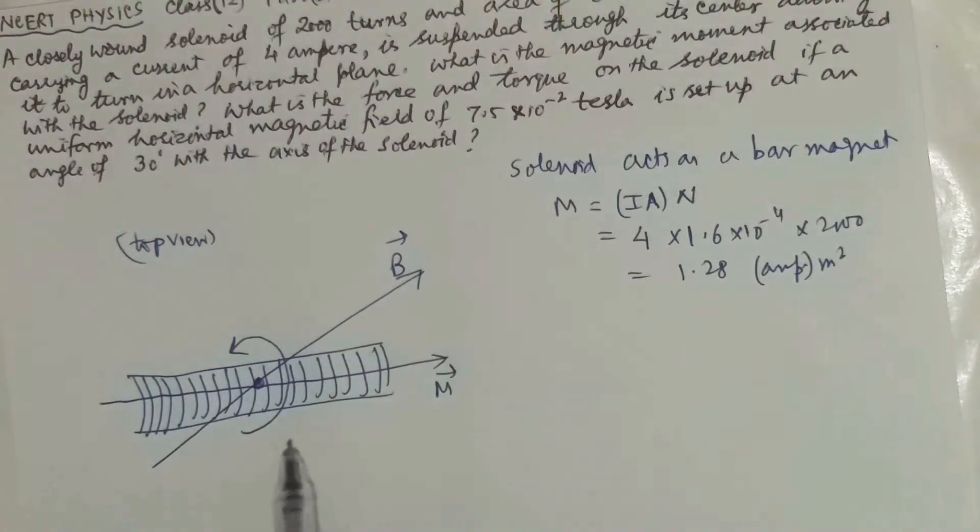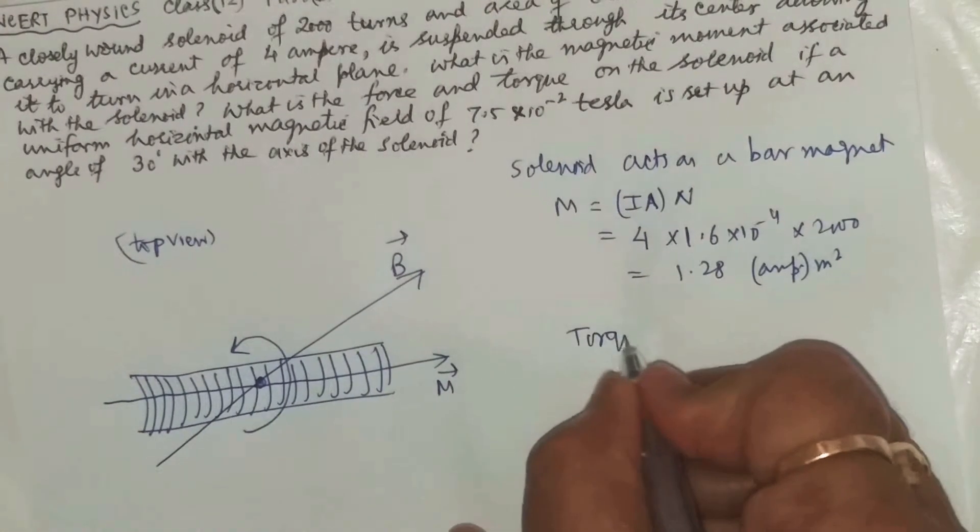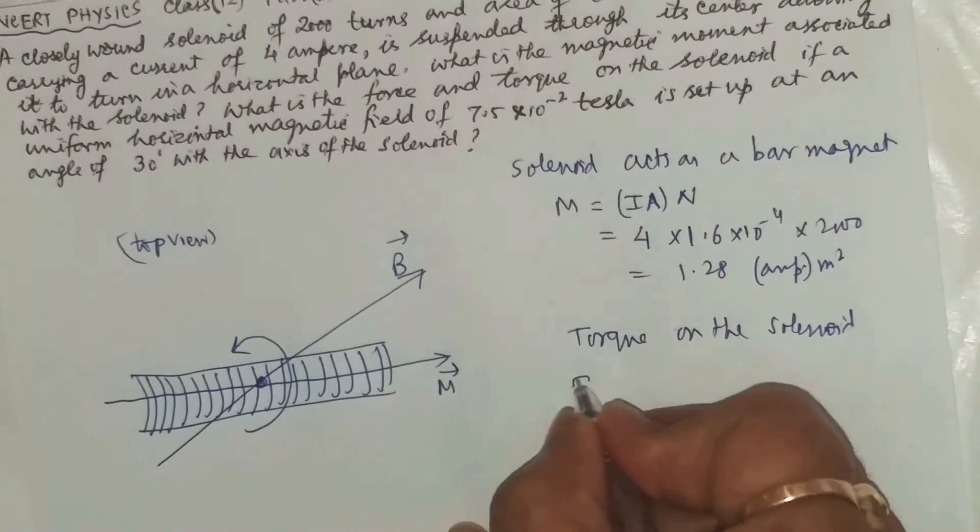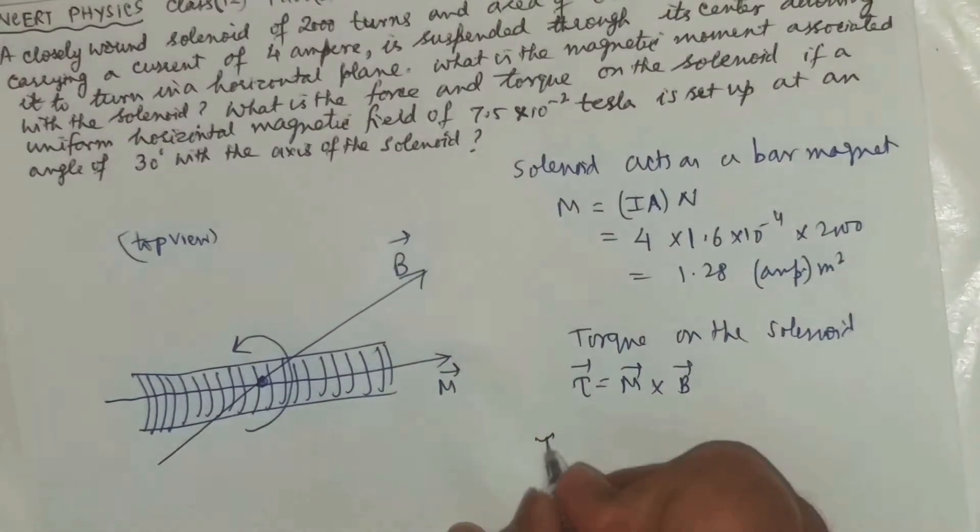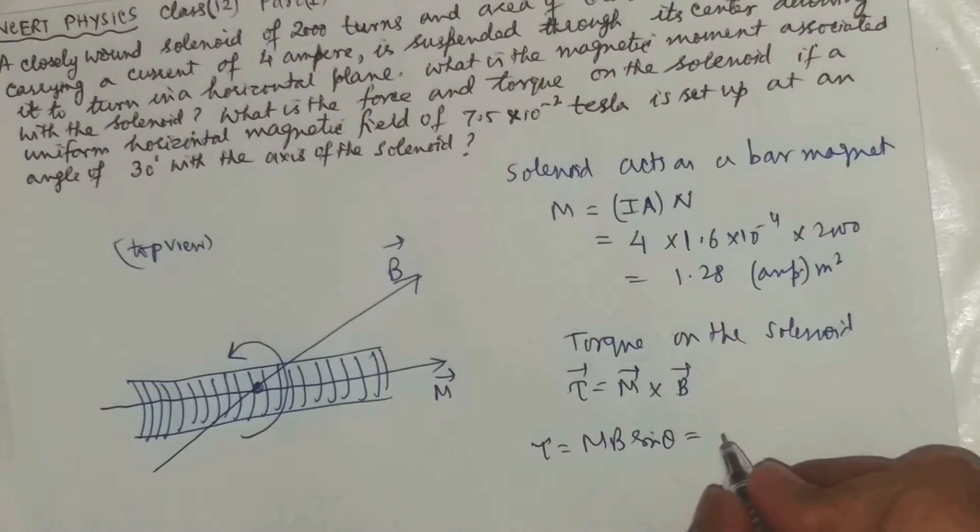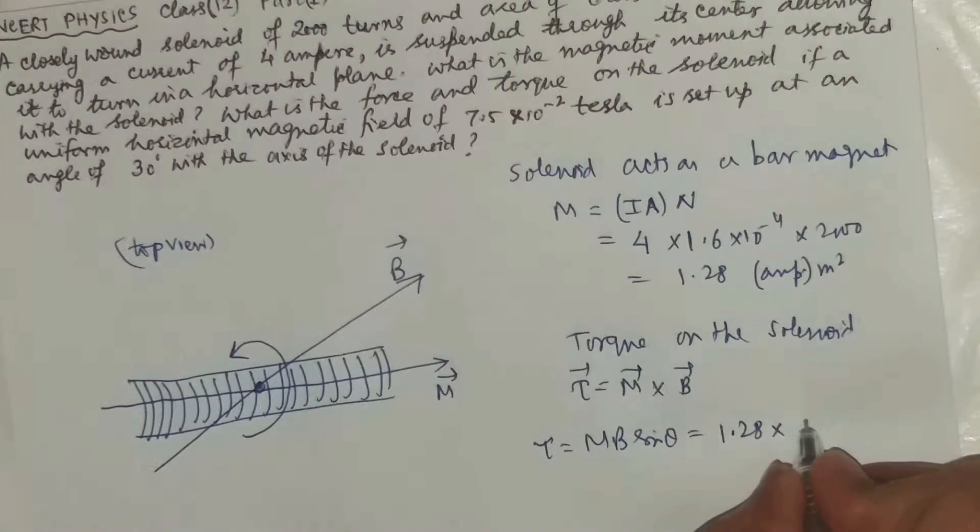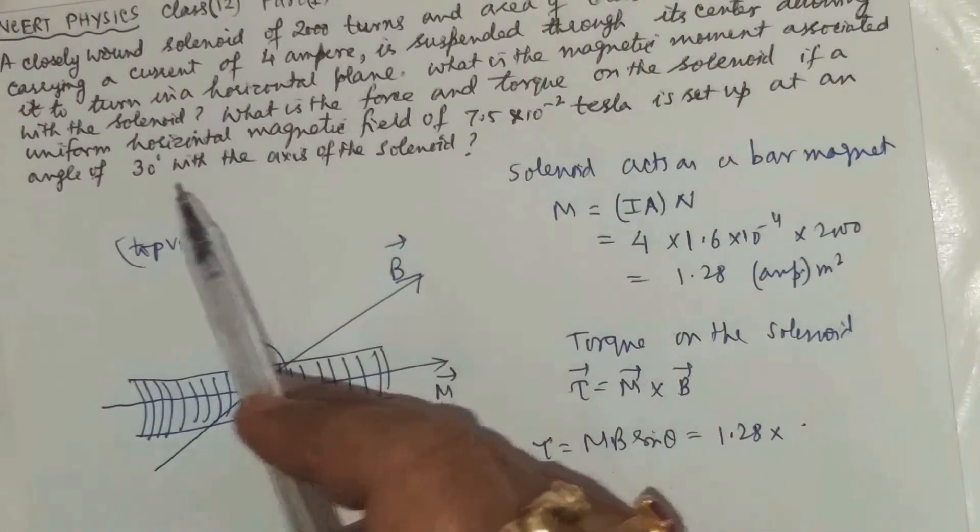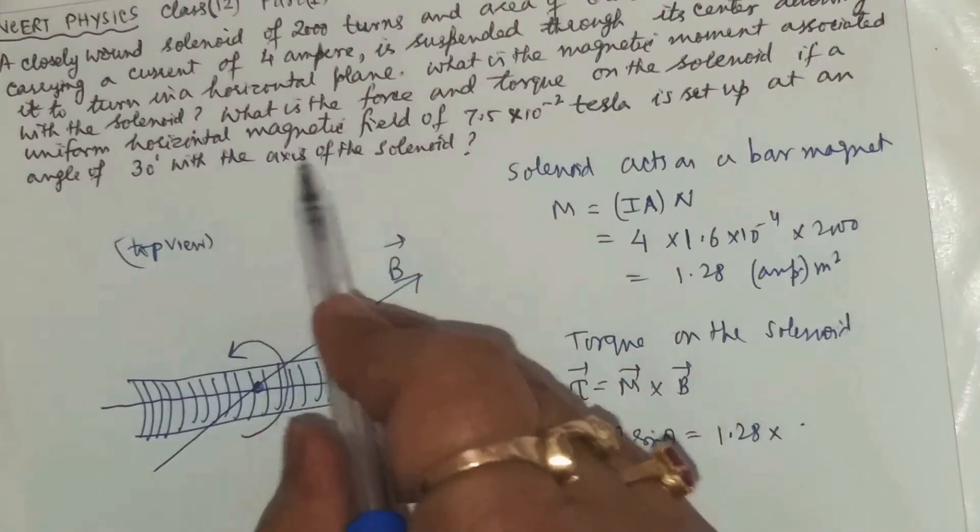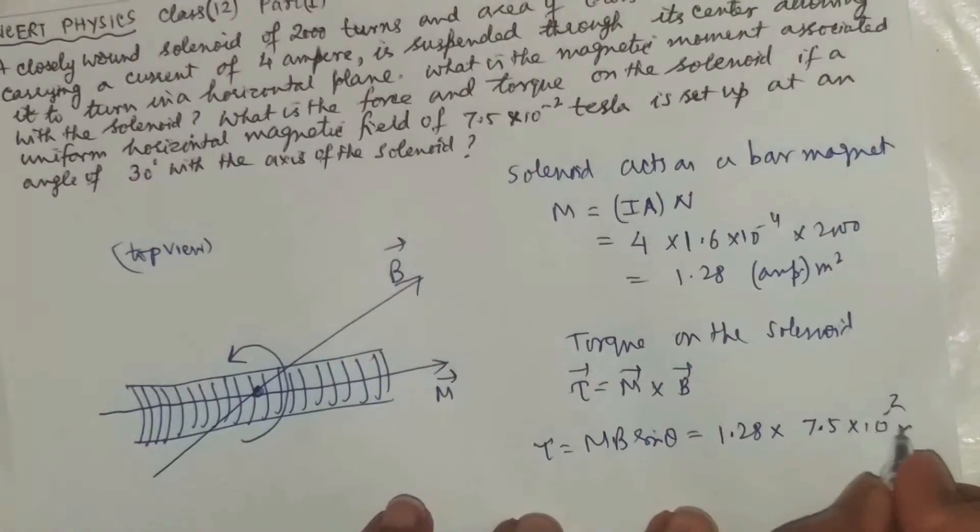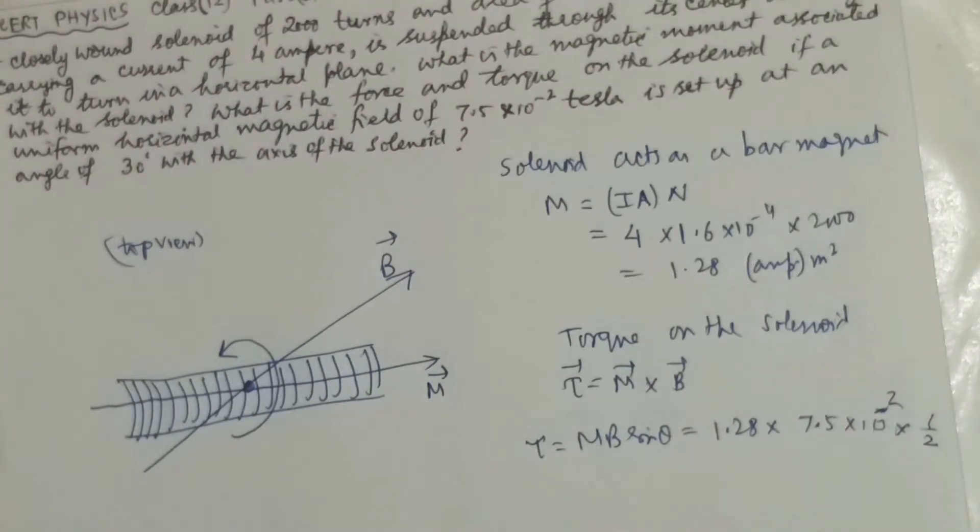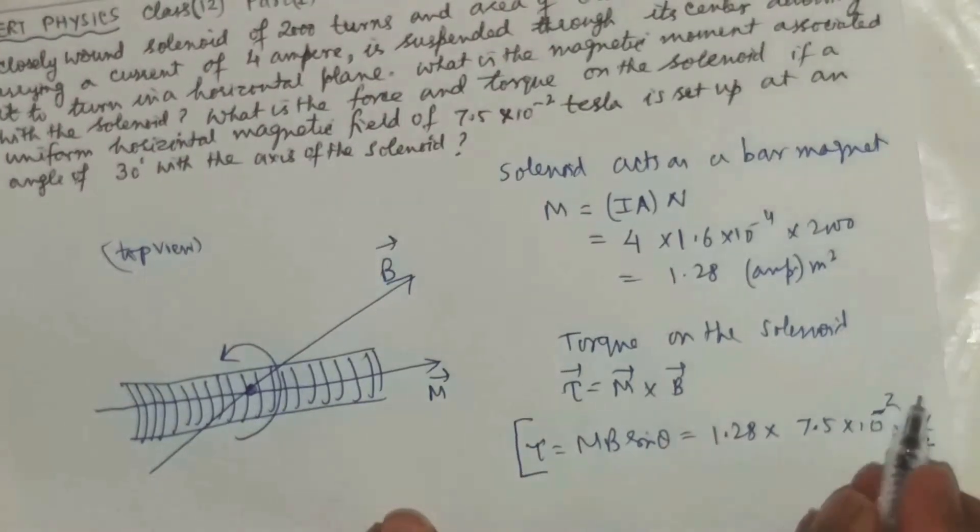So of course this magnetic field will create a torque. Therefore torque on the solenoid, torque will be equal to M cross B and that is the torque will be equal to MB sine theta. So M we have calculated 1.28, B is how much they have. Now this torque is MB, magnetic field value is 7.5×10^-2 and sine theta, sine 30 degree is equal to half. Now we know that this is the torque but the problem is they have not told us to find out the torque.